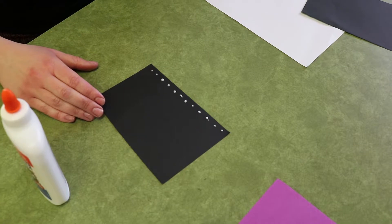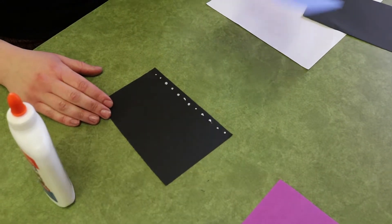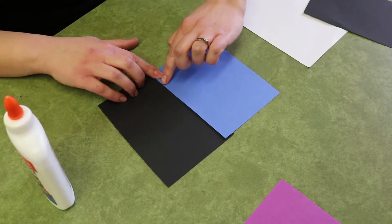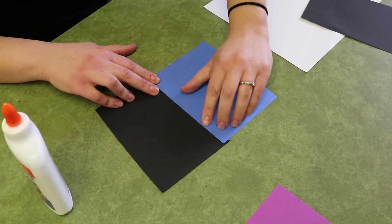Get your dots along the side you need to glue, get your next piece of paper, put it where it needs to go, and give it a good press.